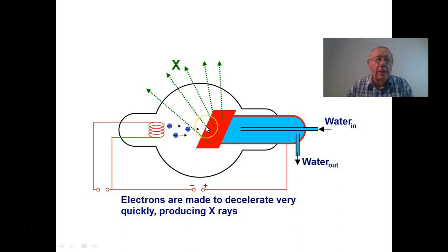When they hit here, they are slowed down. In other words, we have decelerating, slowing down of electric charge that generates the x-rays, the electromagnetic radiation. Electromagnetic radiation is generated when we have accelerated or accelerating charge or decelerating charge. So, here we've got decelerating charge.